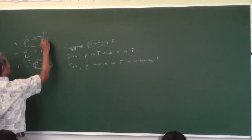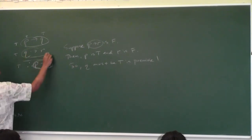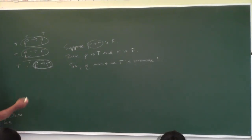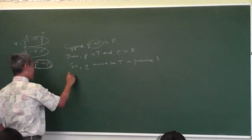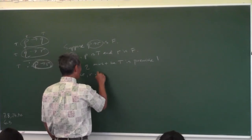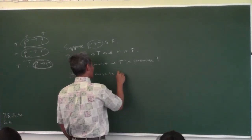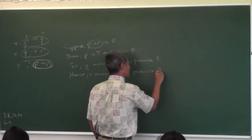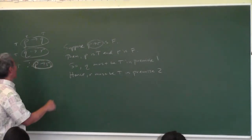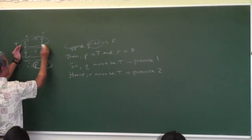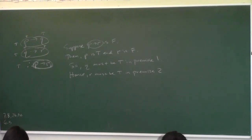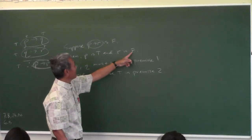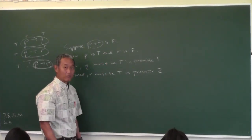Now we know Q is true. If this statement is true — it's a conditional statement as well — and Q is true, what can you say about R? True. Hence, R must be true in premise number two. R must be true because in order for a conditional statement to be true, if the first one is true, the second one has to be true. Does anybody see a contradiction? Right here it says R is false, but over here it says R is true.